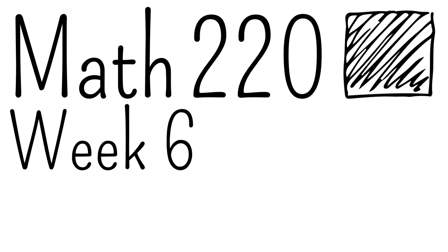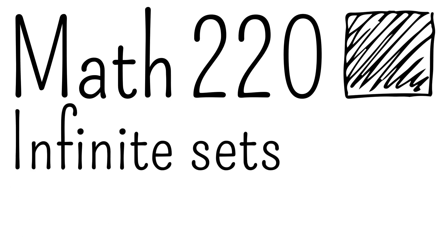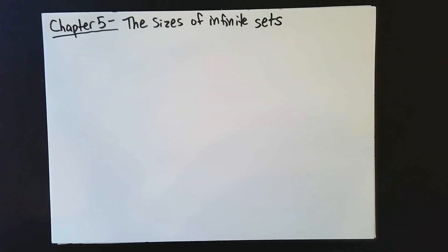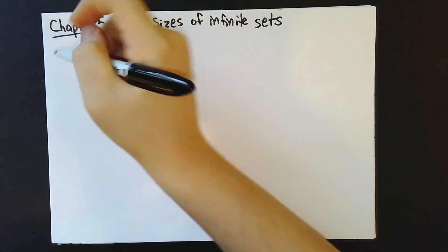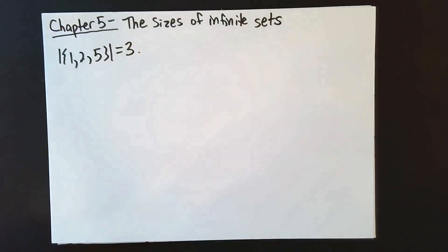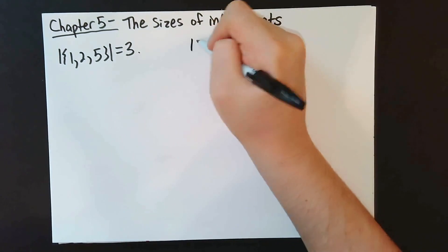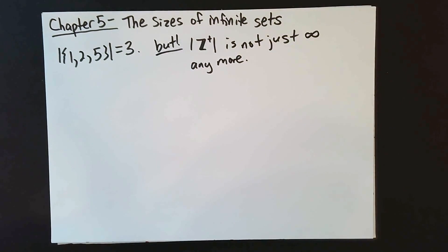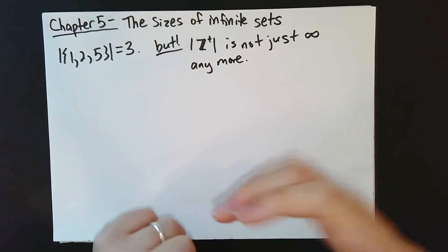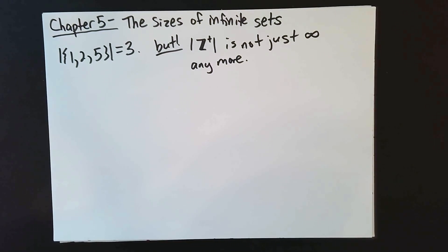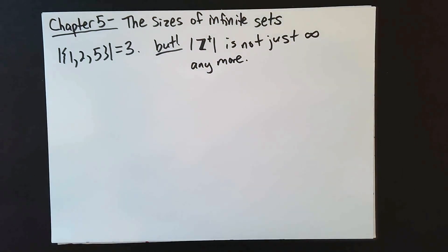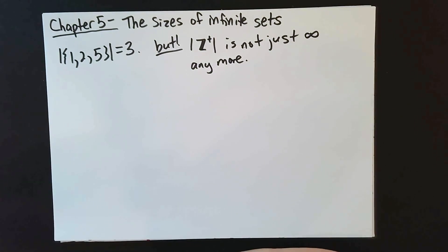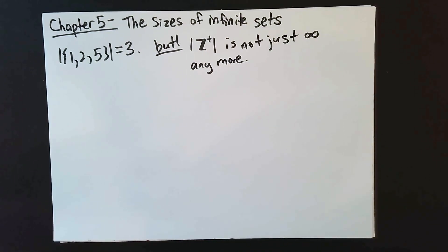Welcome back, everyone. Today we're going to start talking about our last big topic, which I'm just going to call the sizes of infinite sets. First things first, I'm going to have to undo something we've said before, which is that previously we've written things like this for the size of sets. That's still good. But if I ask you for the size of an infinite set, I'm no longer just going to write infinity. Our goal in this chapter is to decide what the sizes of infinite sets are and how we should go about comparing them. A lot of what we're going to do will be very intuitive, and a lot will be very unintuitive, so we'll always be guided by carefully chosen definitions to stay on the rigorous side.